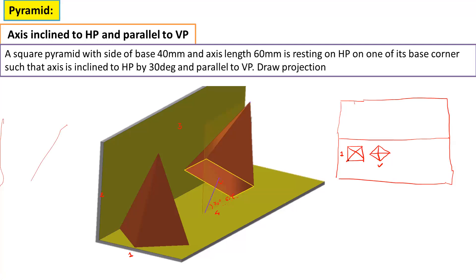When you draw the top view for the first stage, you have two options. You can draw the top view where the two edges are perpendicular to the XY line, or you can draw the top view where the two edges are equally inclined by 45 degrees. The correct position is the second one, because after rotation it should rest on one of its base corners. Draw the top view that way, take the projections, and complete the front view — this is your first stage.